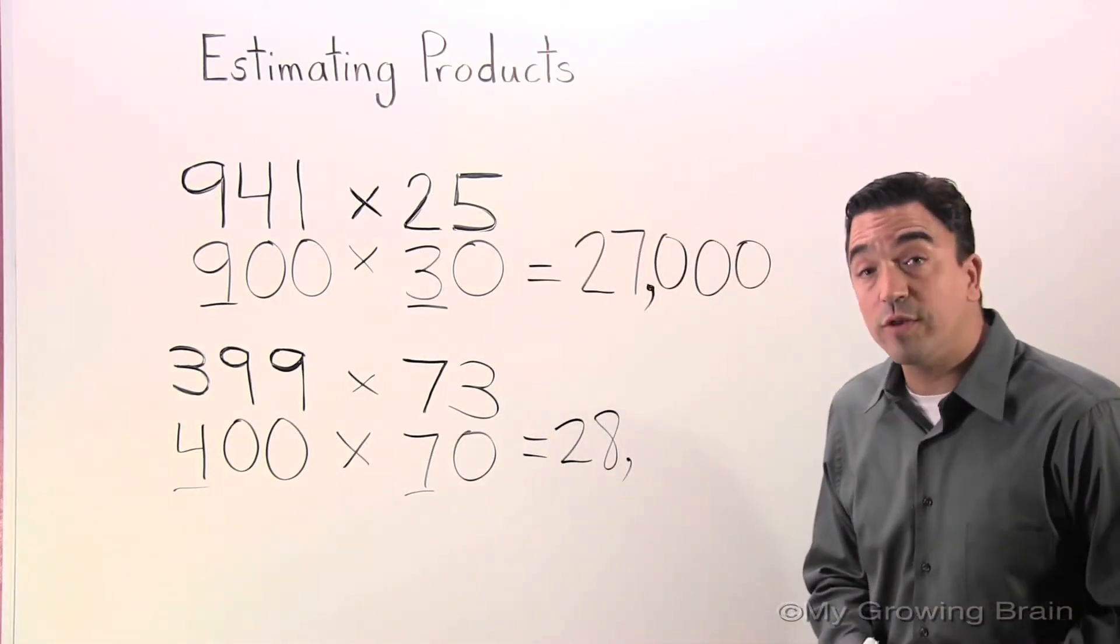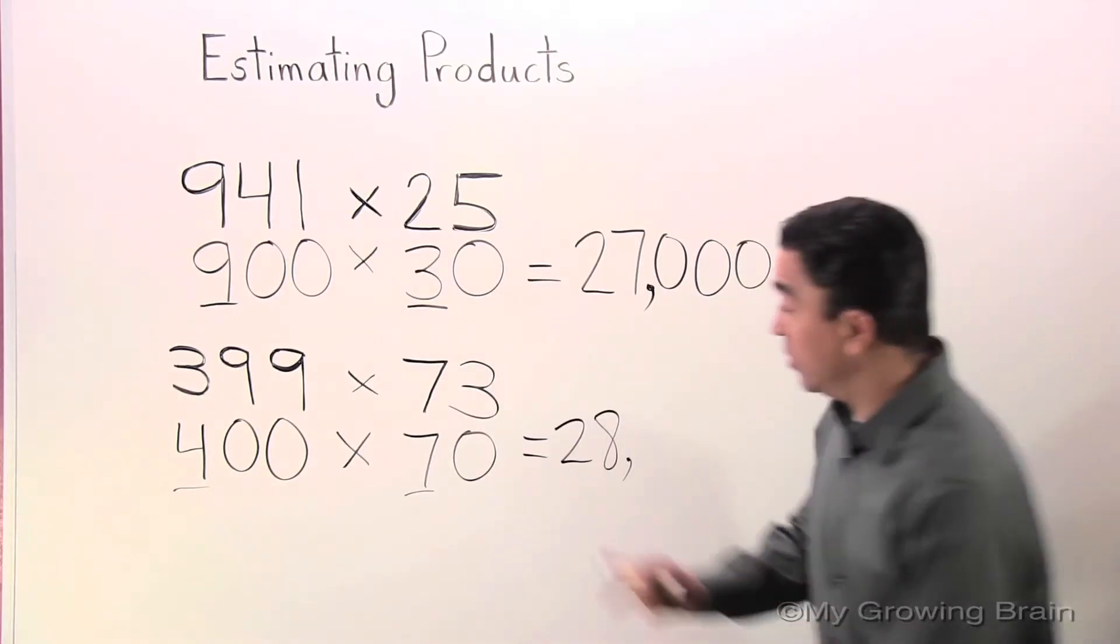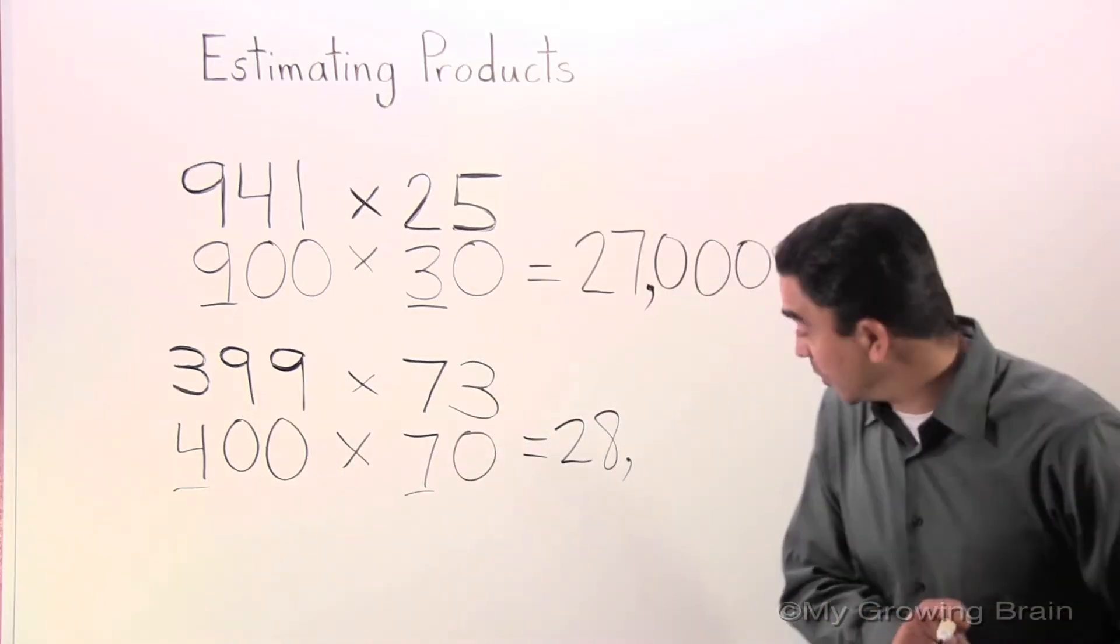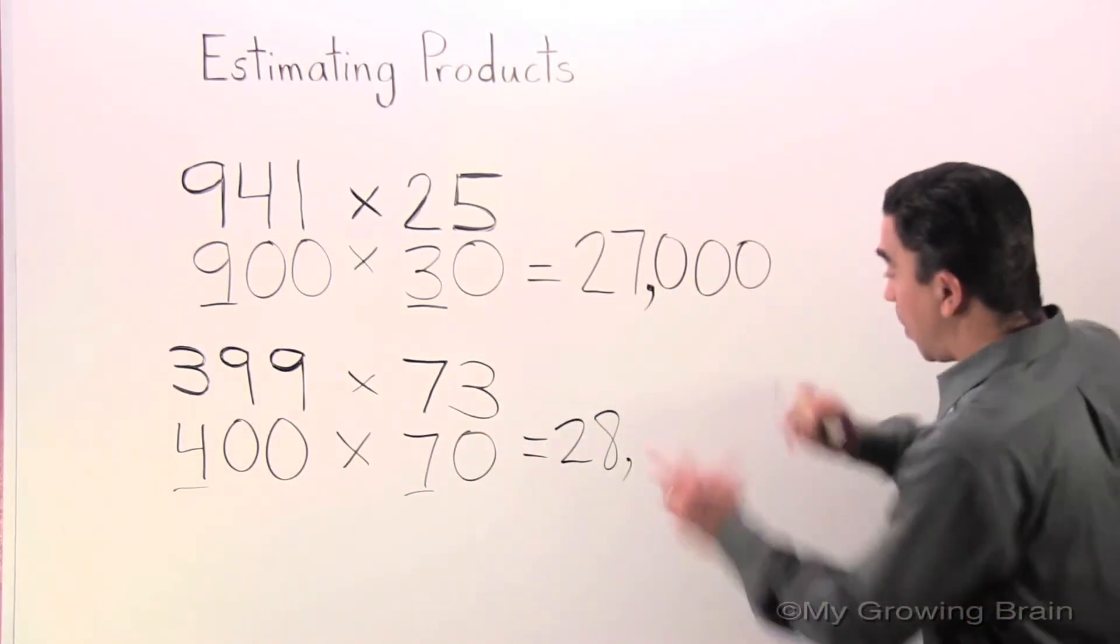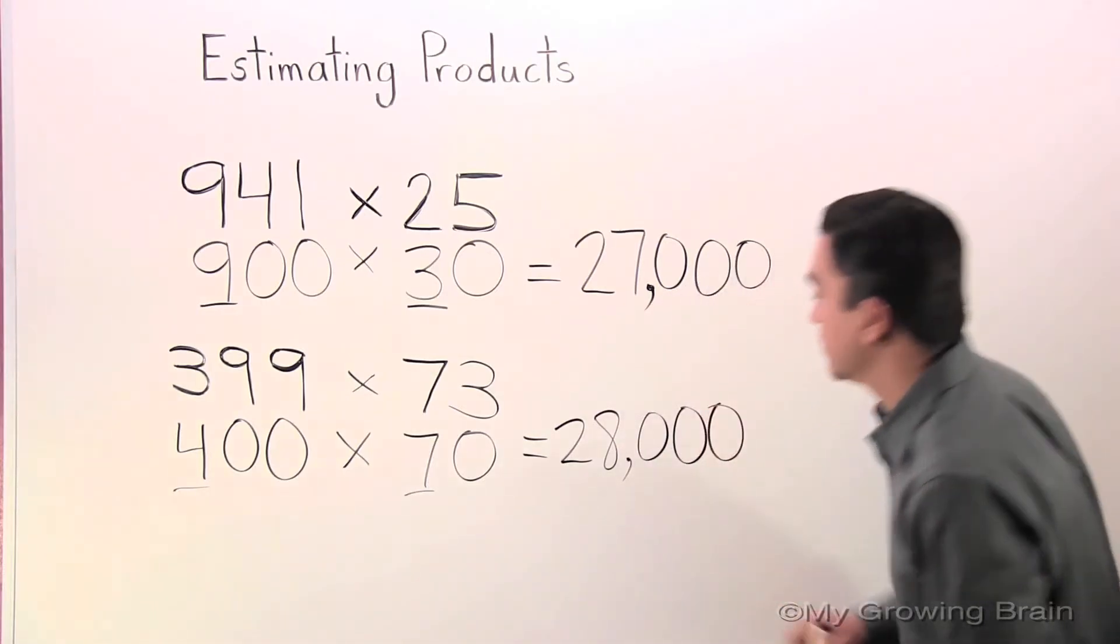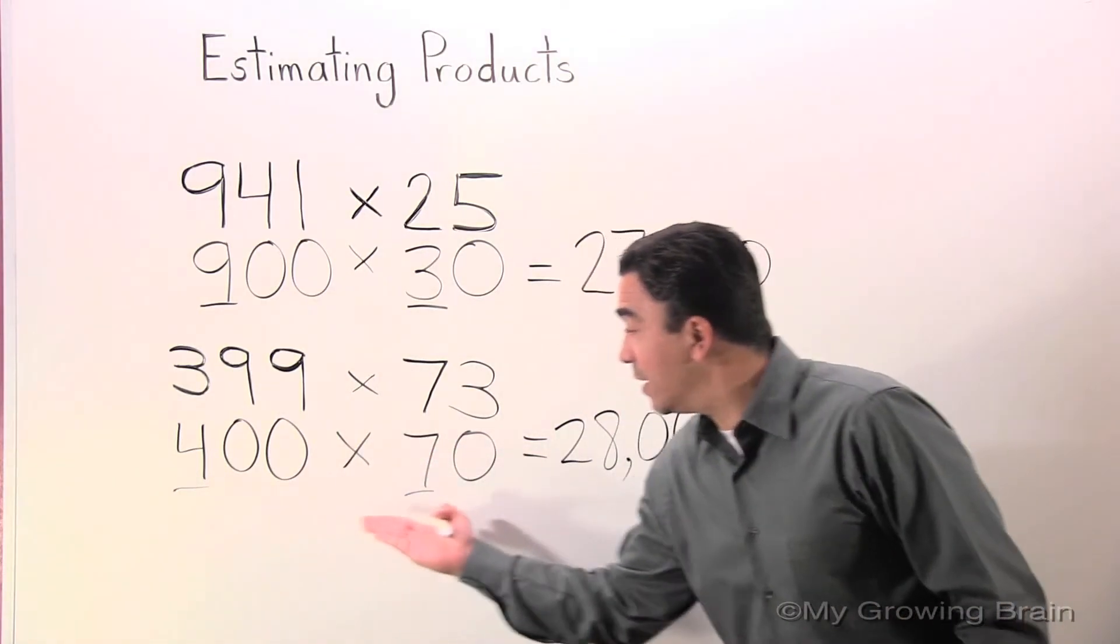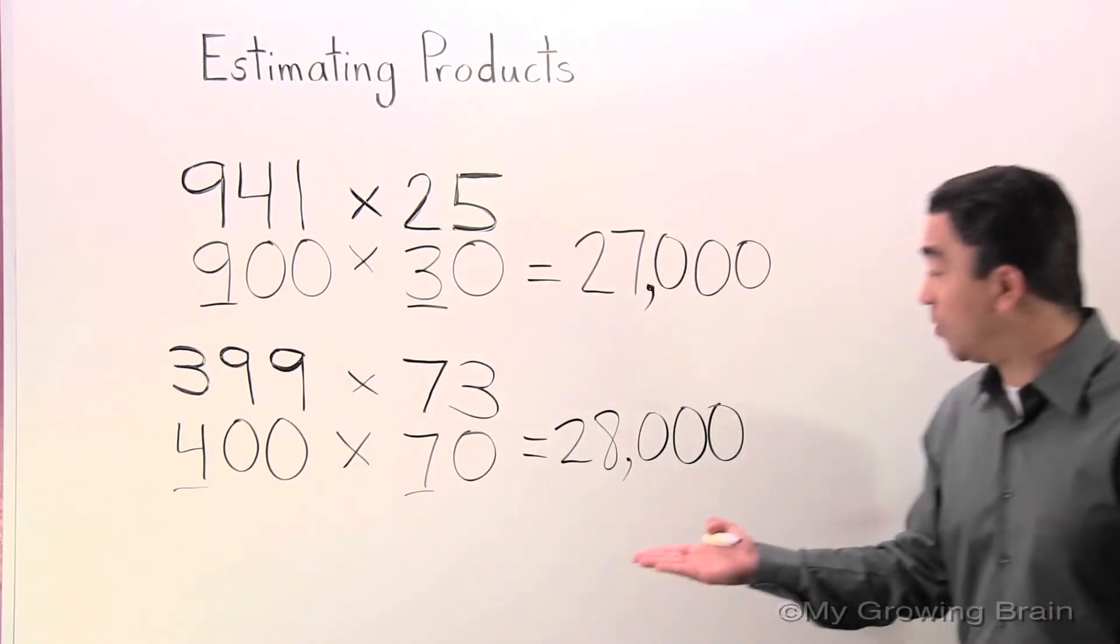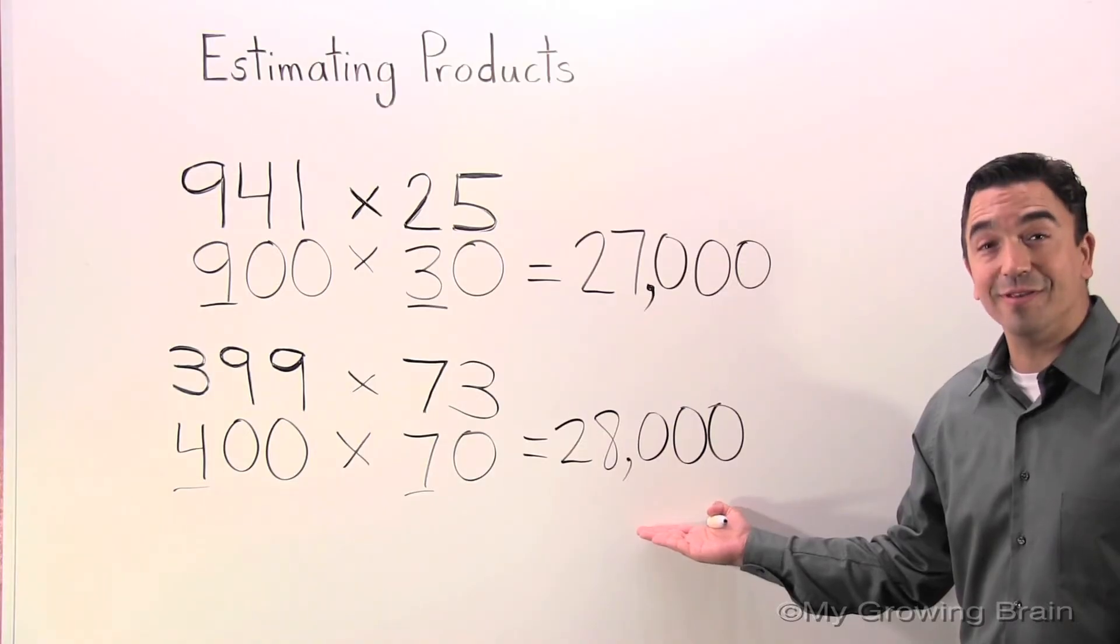Now, I'm going to grab the three zeros and I'm going to put it after the 28. 400 x 70 equals 28,000.